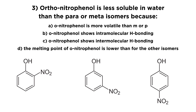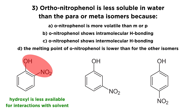The ortho isomer has the two groups adjacent, meta means they're two positions away, and para means they are on opposite sides of the ring. The ortho-nitrophenol has a very special situation: the hydroxyl group is adjacent to the nitro group, and there will be interactions between them. Because that hydroxyl is interacting with the nitro group, it will be less available for interactions with the solvent — and those are the interactions that would make it soluble. Something is soluble in water if it can interact with water molecules, so if the hydroxyl group is busy interacting with the nitro group rather than with surrounding water, that makes it less soluble.